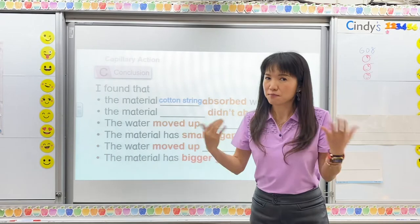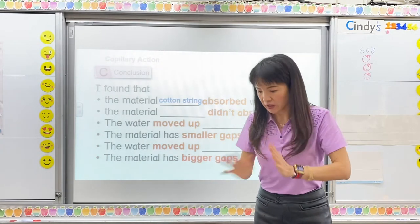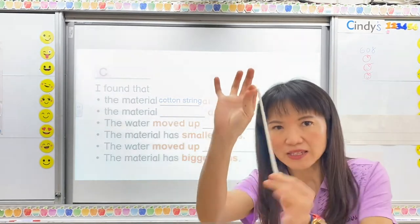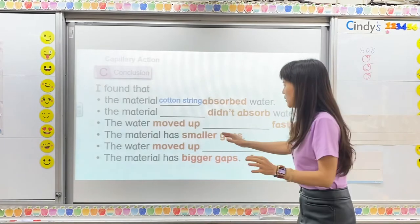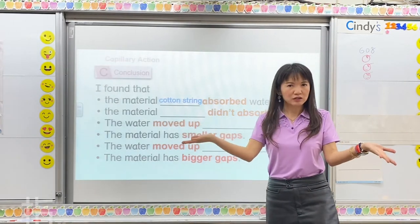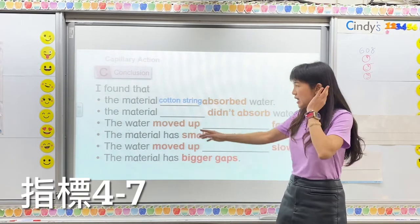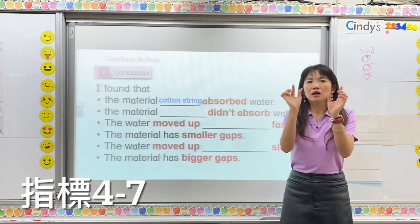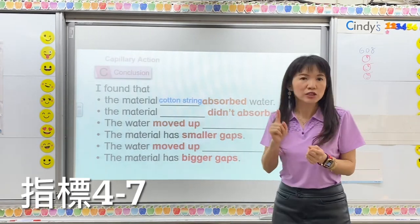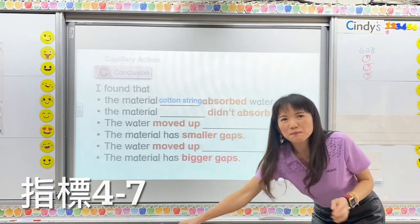Which one will have better and faster capillary action? Yes, you're right — the cotton string. And the material, why does it have better capillary action? Because it has smaller gaps. 它有比较小的间隙，太棒了。你们真的好棒了, good job.